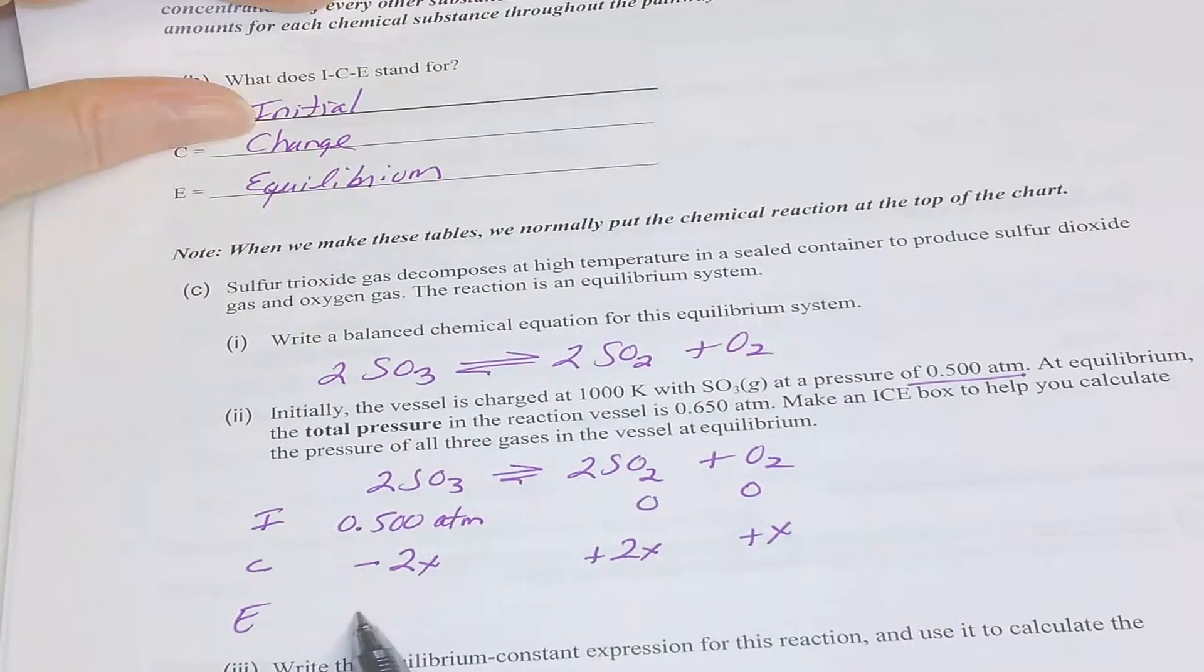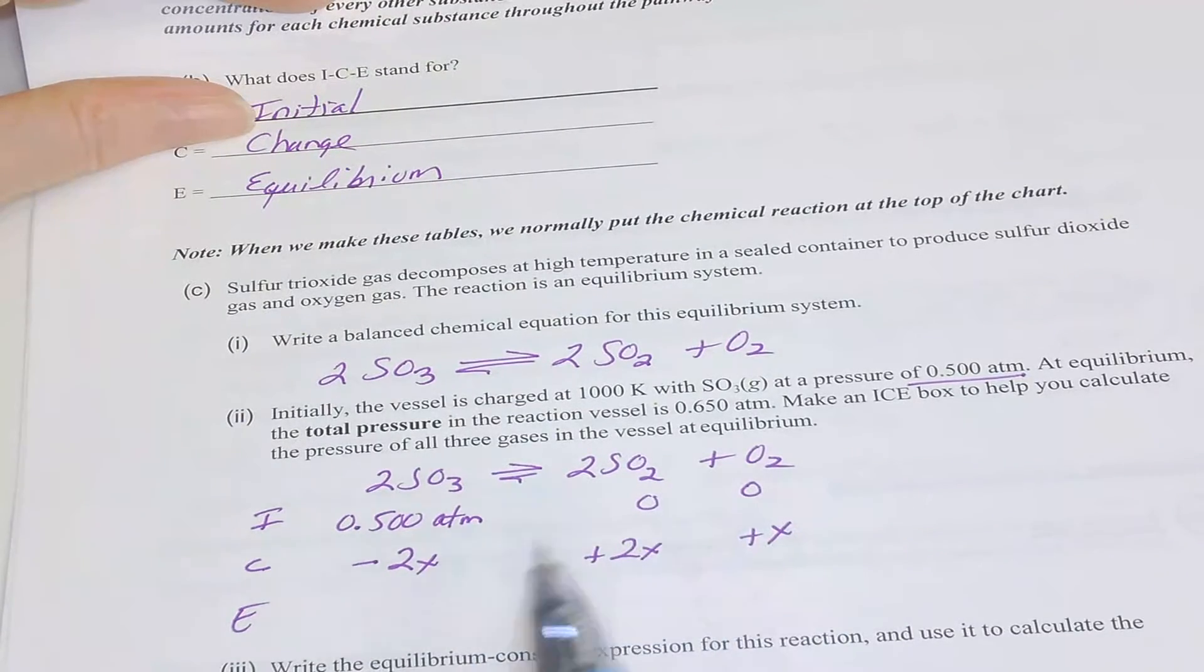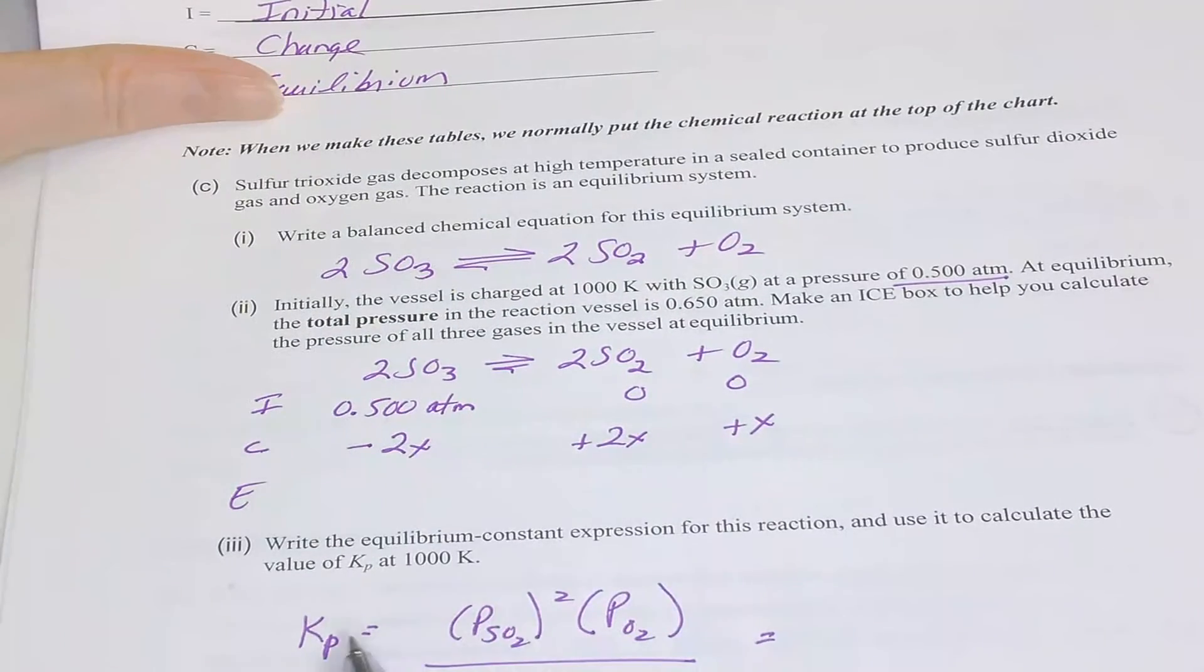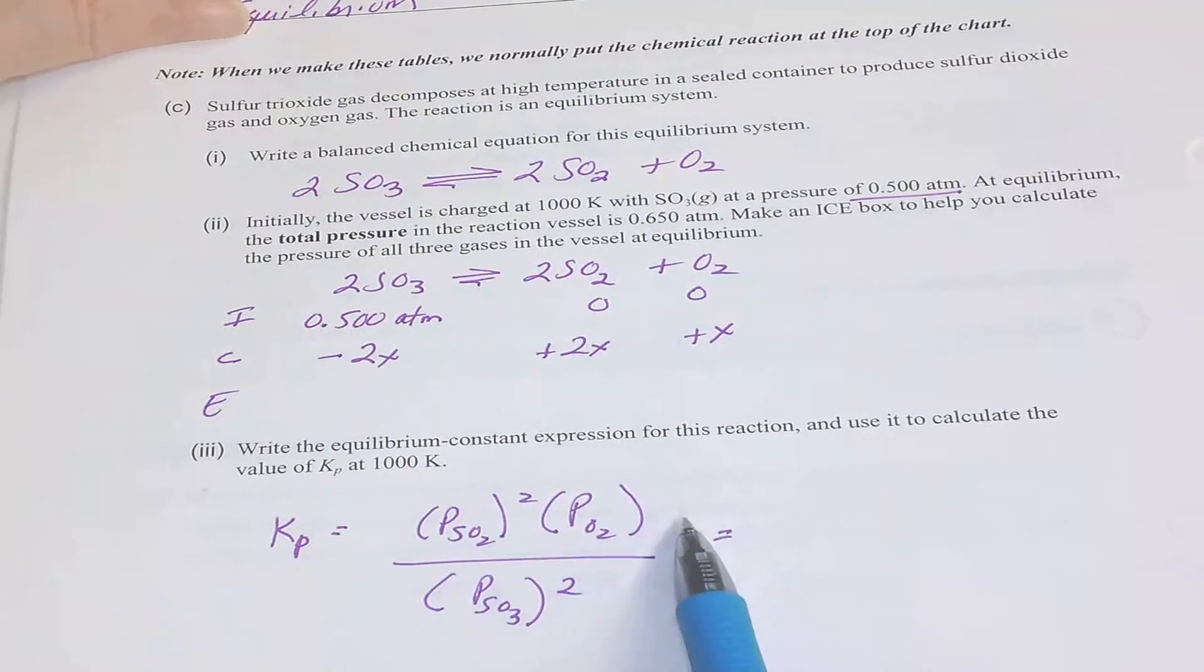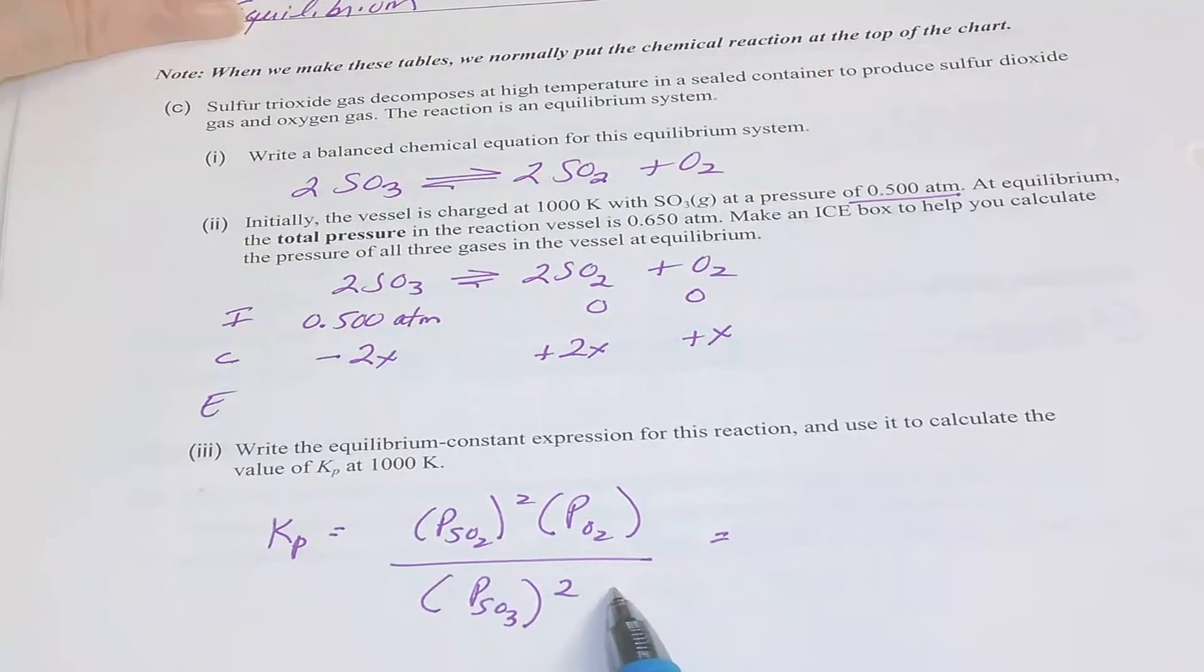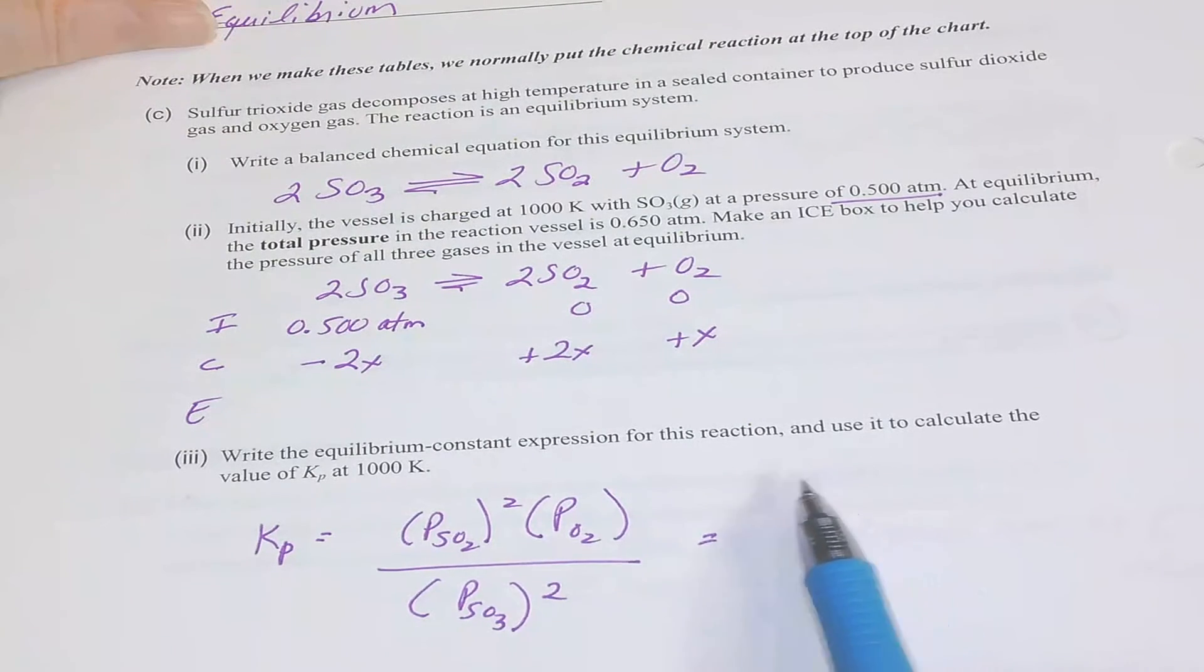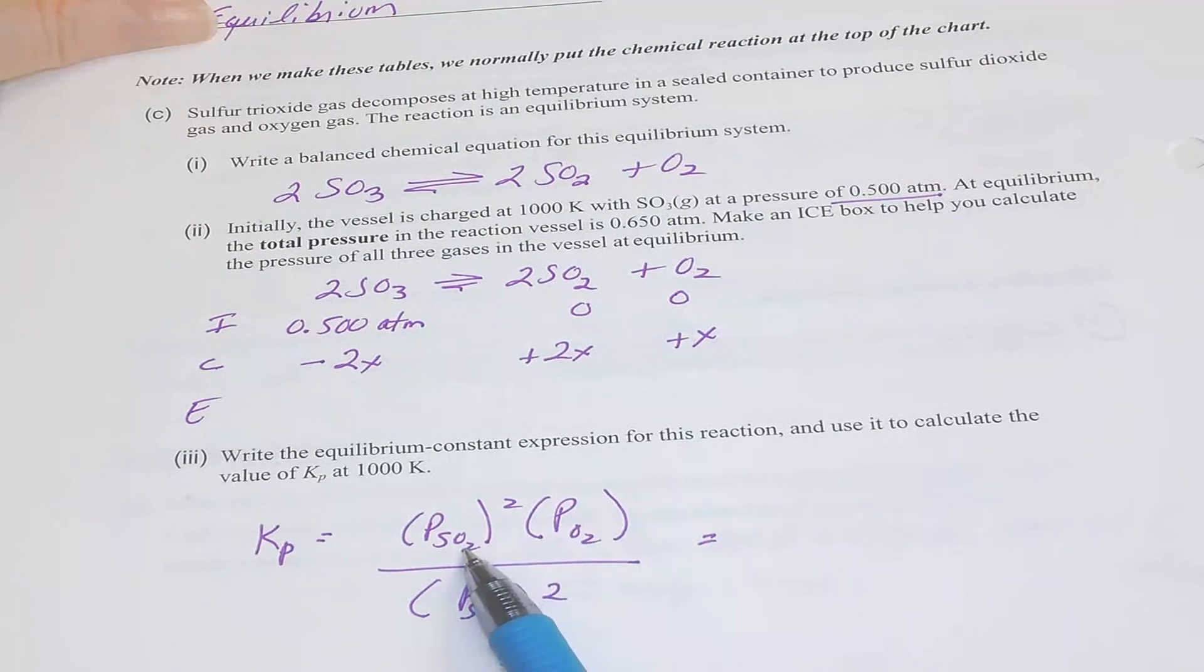Figure out what you would put down here for these equilibrium values and see if you can write the expression based on this. So here's the KP expression. Show me that you know what you would put in to represent SO2, O2, and SO3.